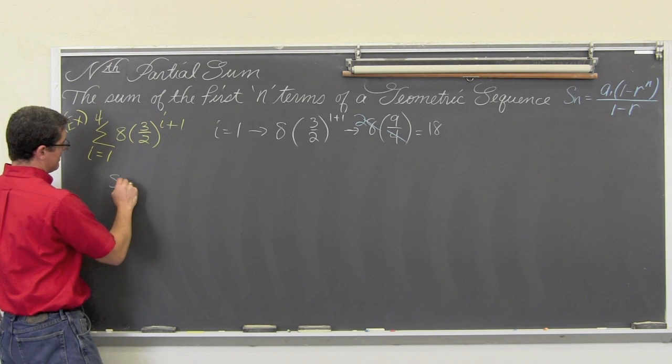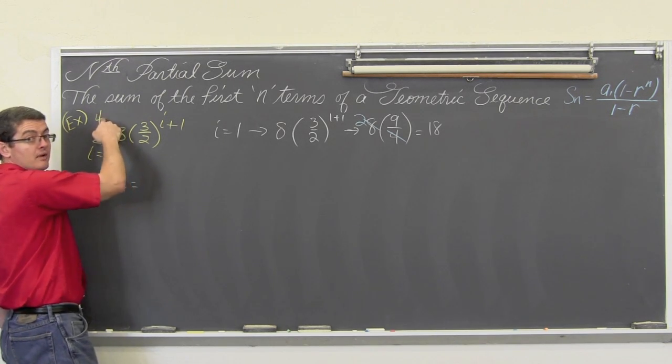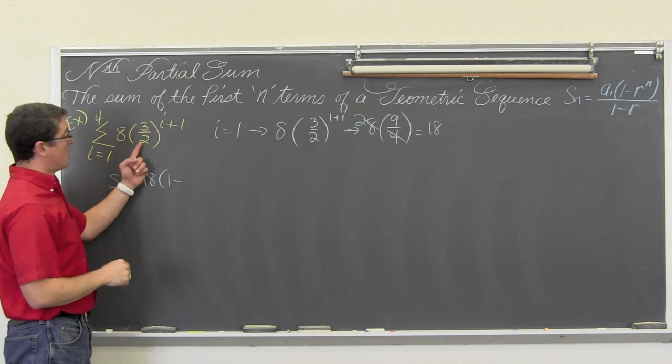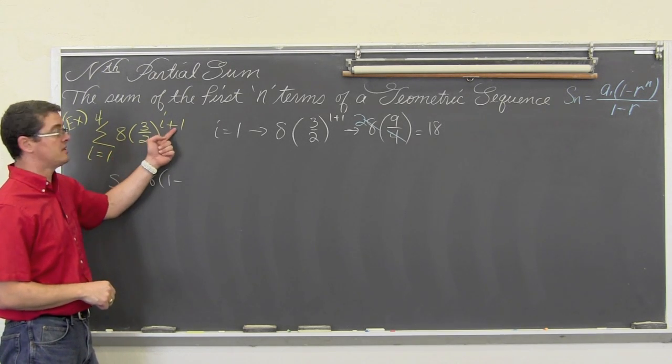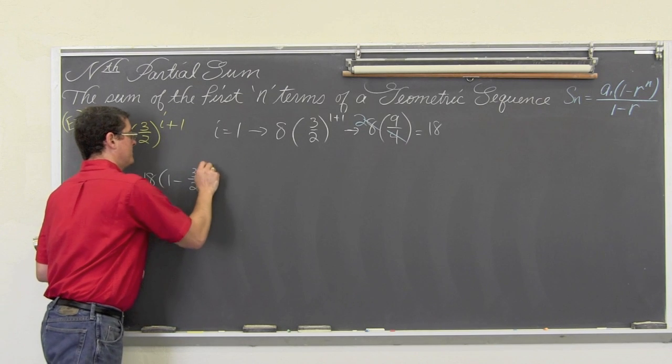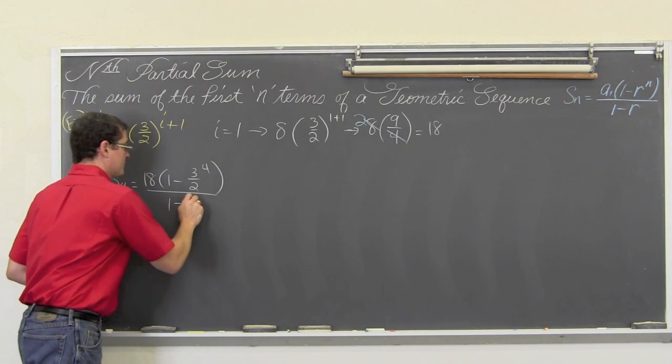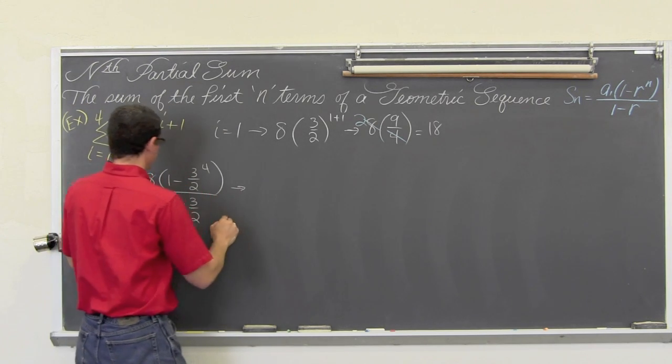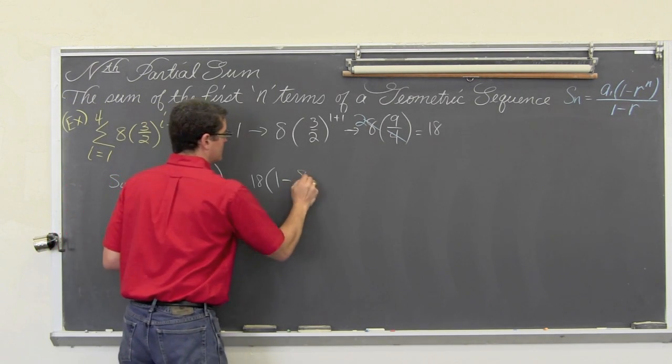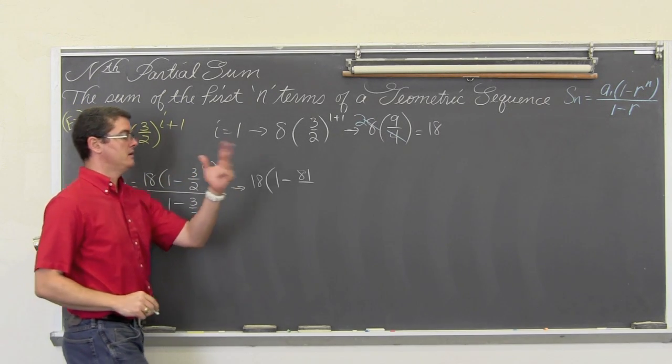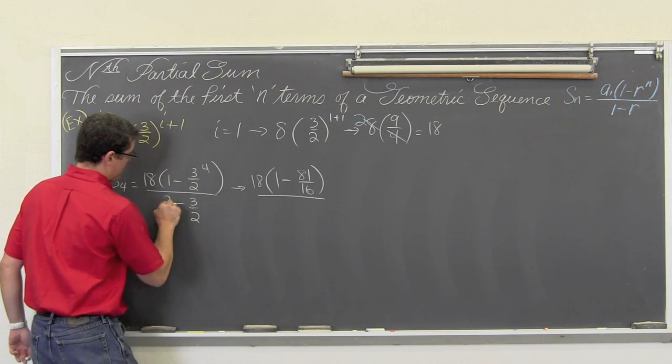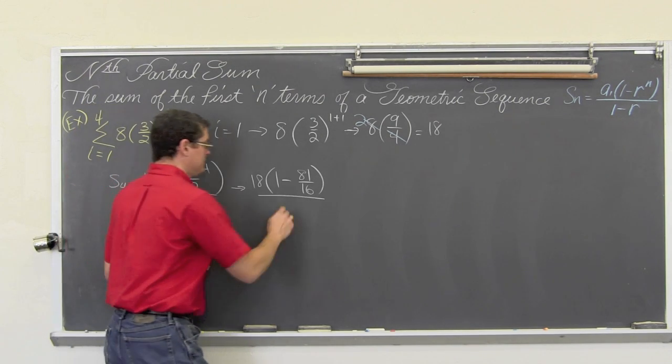So my partial sum, the sum of my first four terms, S sub 4 is equal to a sub 1, which is 18, times 1 minus my constant ratio of r. My r value is 3 halves to the n power over 1 minus r, which is again 3 halves. So this is going to come out to be 18 times 1 minus 3 to the 4th, which is 81, over 2 to the 4th, which is 16, over 1 minus 3 halves. That is 2 over 2, and 2 minus 3 is negative 1 over 2.